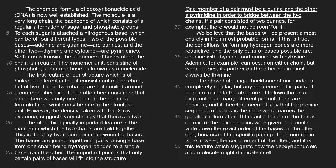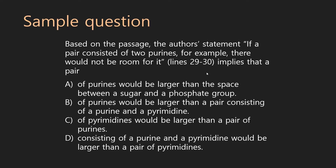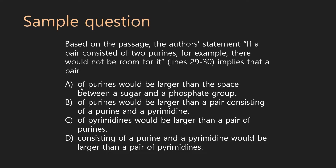Answer A says: 'a pair of purines would be larger than the space between a sugar and a phosphate group.' Well, it kind of makes sense — the purines would be larger, because two purines wouldn't fit. So purines are definitely larger, but it was larger than a purine and pyrimidine pair, not larger than a sugar and phosphate group. So A doesn't seem right. B says: 'it implies that a pair of purines would be larger than a pair consisting of a purine and a pyrimidine.' That pretty much says exactly what I just said, so I'm pretty confident that's the answer — it's such a direct match.